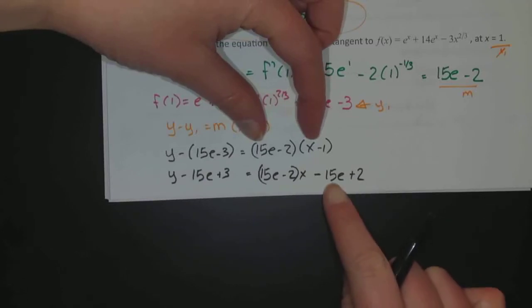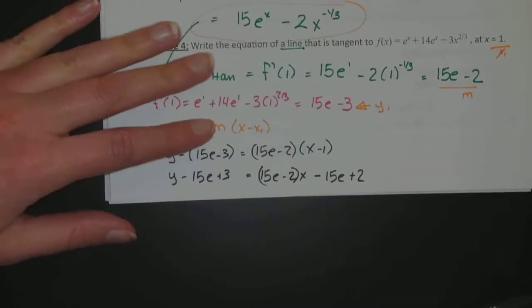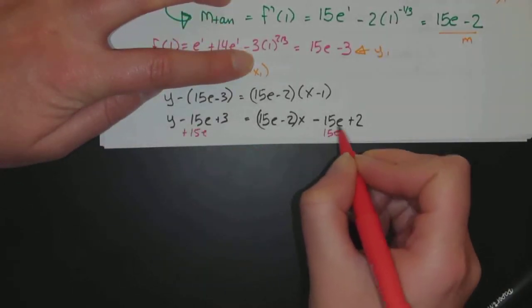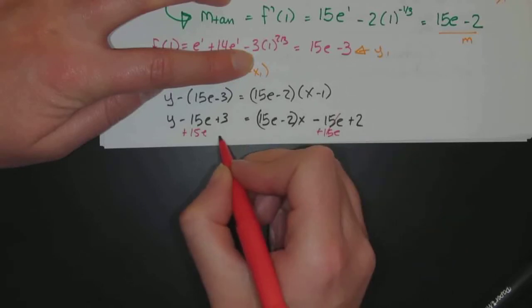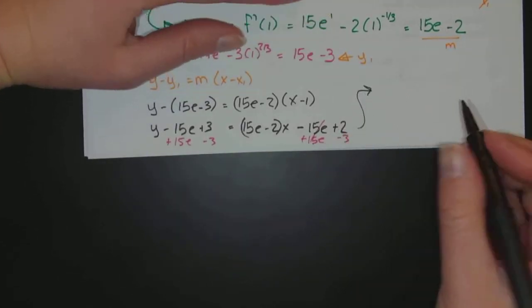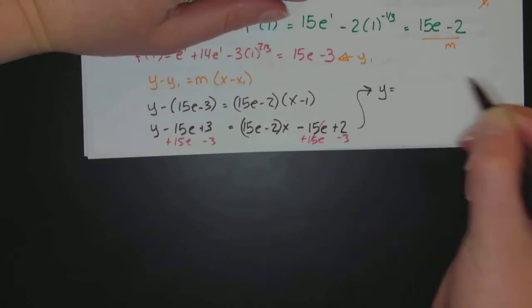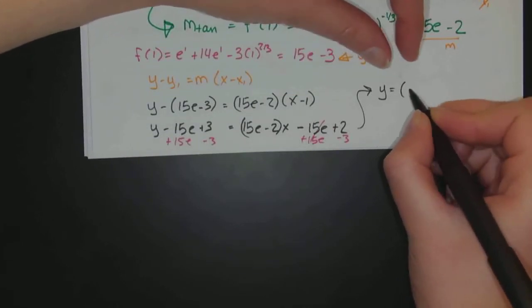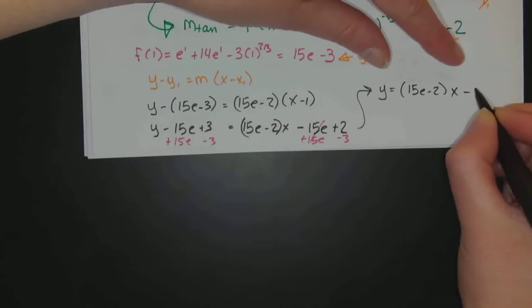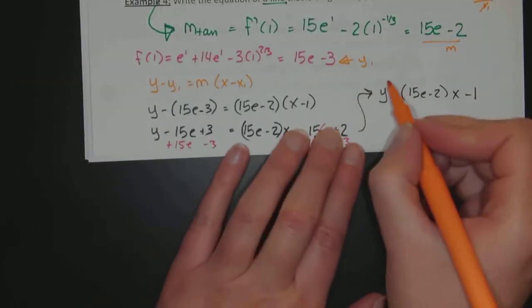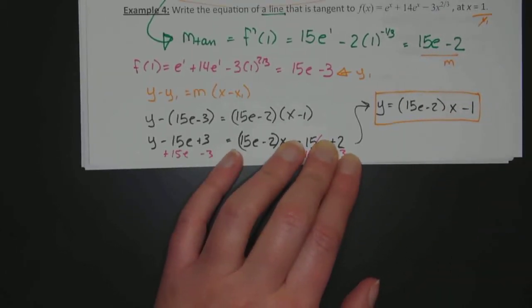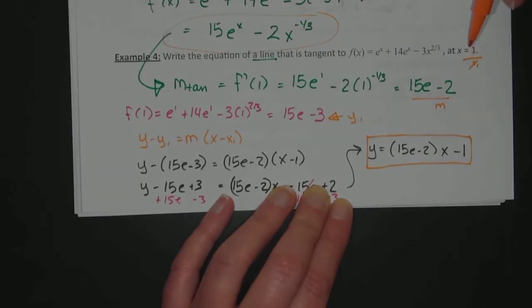Because when I add over the 15e, they're going to cancel. And when I subtract over the 3, those are going to be like terms. So it's not a conventional y equals mx plus b because of the e in there, but the equation will be y equals, the slope is 15e minus 2, so 15e minus 2 times x minus 1. So this is the equation of the line that is tangent to this curve at the point where x is equal to 1.